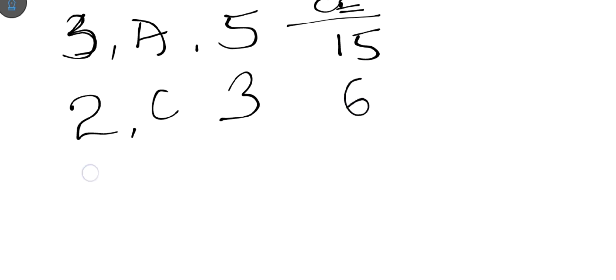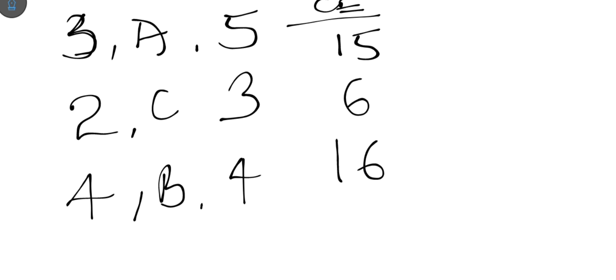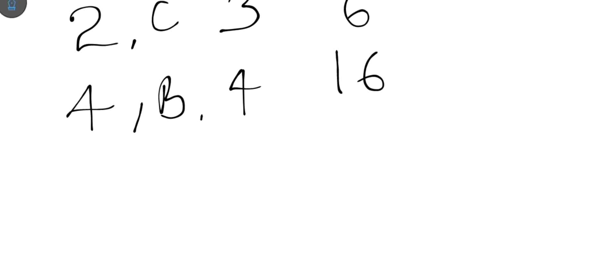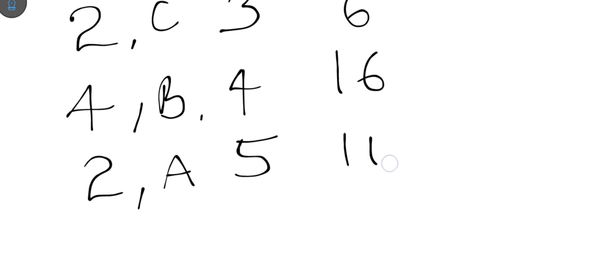If there is a 4-credit unit course and you score B, the point for B is 4, so the credits earned is 4 × 4 = 16. For another course worth 2 credit units where you score A (5 points), the credits earned is 2 × 5 = 10.